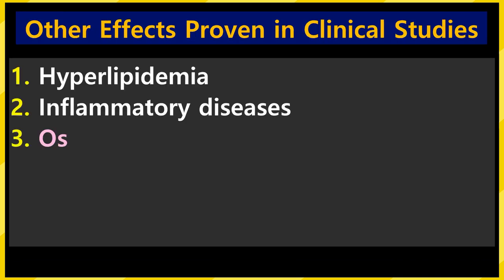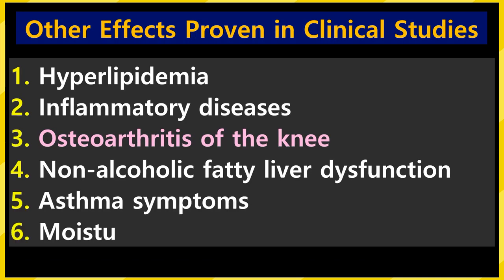Finally, other proven effects of turmeric: 1. Hyperlipidemia improvement. 2. It has strong anti-inflammatory properties, so turmeric is a good plant for various inflammatory problems in the body. If you have arthritis and take turmeric continuously, symptoms of degenerative arthritis will be improved. 3. In non-alcoholic liver disease, liver function is improved. 4. Asthma symptom improvement and skin-brightening effects have also been reported.